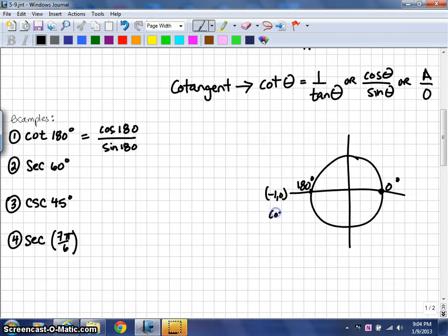And, the coordinate at that location is the coordinate negative 1, 0. The cosine is the x value, and the sine is the y value. So, if we're taking those two values and making them into a fraction, we would say negative 1 over 0.